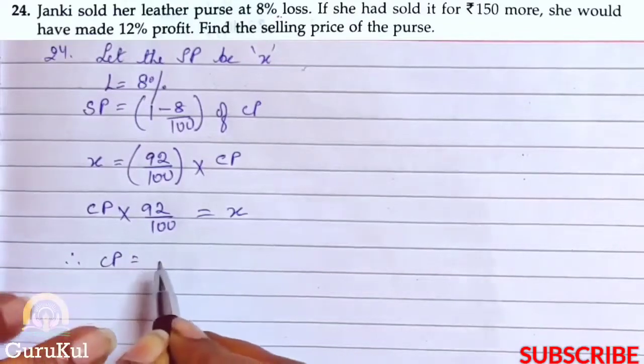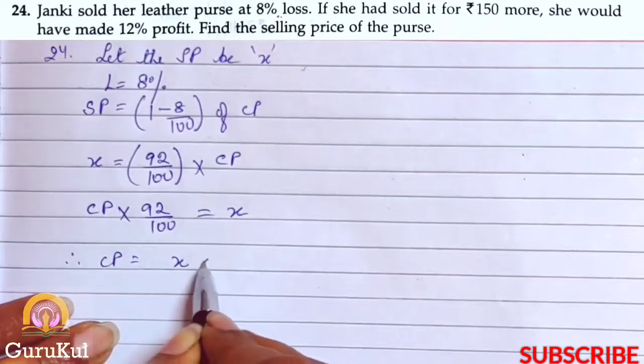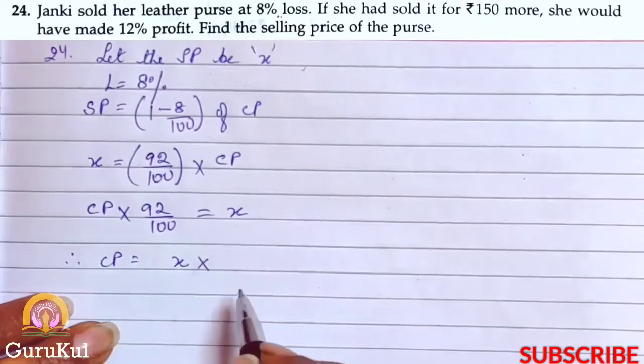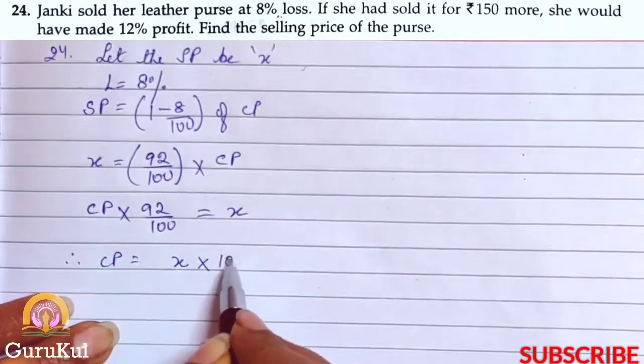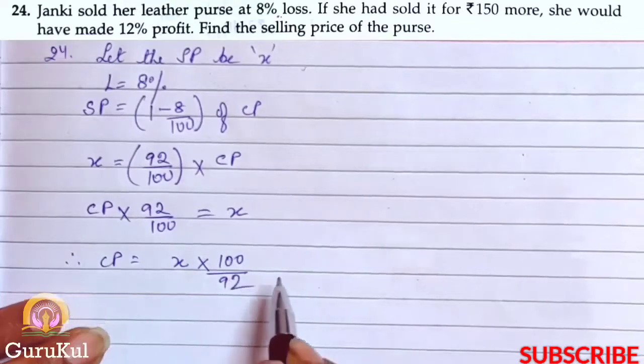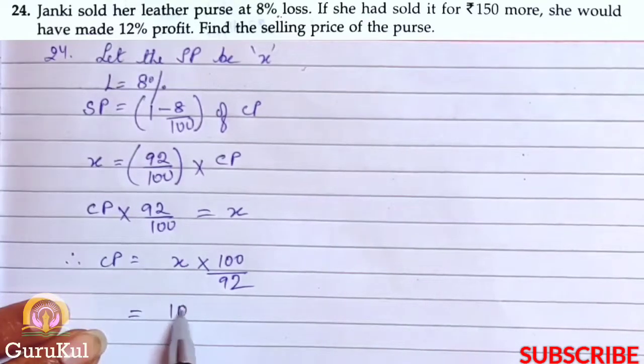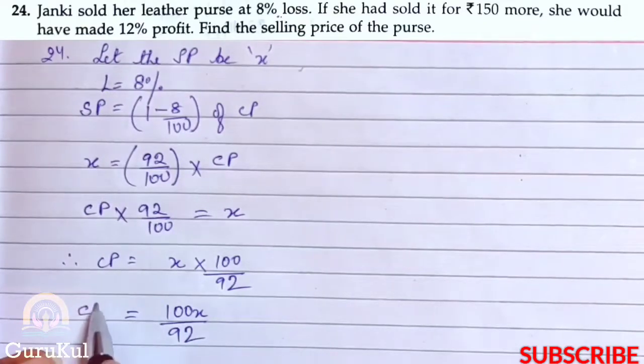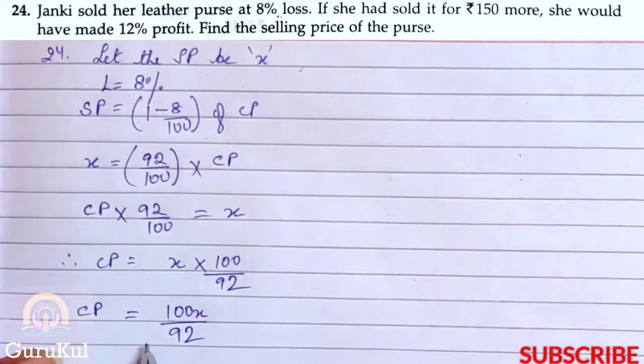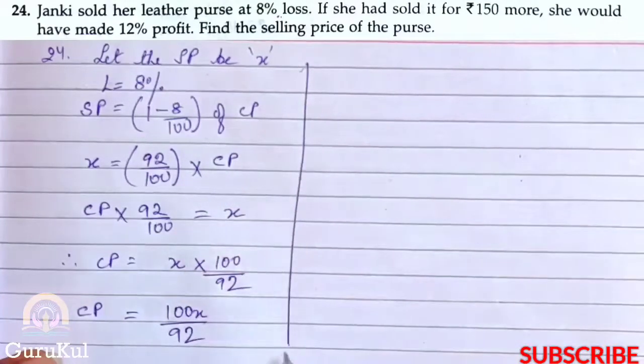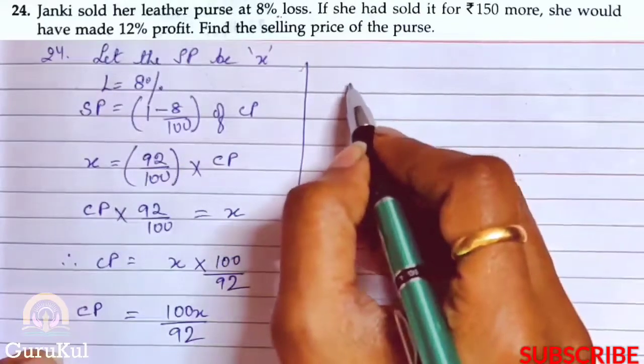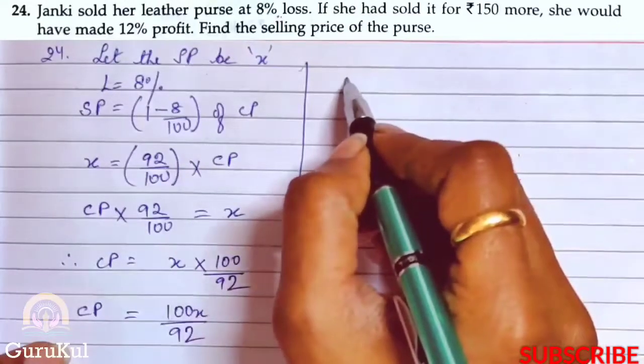Therefore CP equals x into 100 by 92 through cross multiplication. That gives us 100x by 92. This is the cost price of the leather purse. Moving to the next part, the CP is 100x by 92.